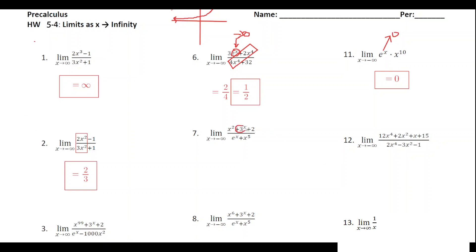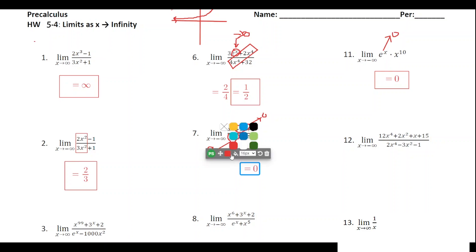For number seven, we have a couple of exponential terms — three to the x and e to the x — which would outrun all other terms as x goes to positive infinity. But as x goes to negative infinity, these exponential functions go to zero rather than increasing or decreasing without bound. So we look at the remaining polynomial terms: the denominator has the larger degree, meaning it grows more quickly than the numerator, so the horizontal asymptote is y equals zero.